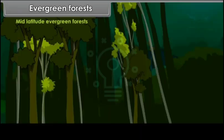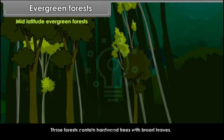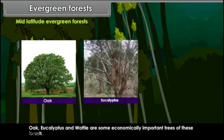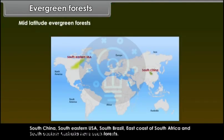Mid-latitude evergreen forests are found on the eastern margins of continents. These forests contain hardwood trees with broad leaves. Oak, eucalyptus and wattle are some economically important trees. Such forests occur in South China, Southeastern USA, South Brazil, the East Coast of South Africa and Southeastern Australia.